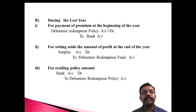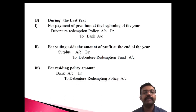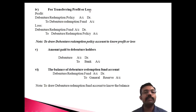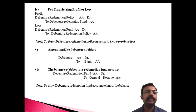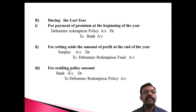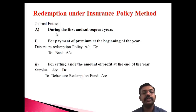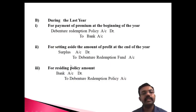To summarize the last year entries: first, paying the premium — Debenture Redemption Policy Account to Bank; second, setting aside profit — Surplus Account to Debenture Redemption Fund; third, receiving the policy amount — Bank Account to Debenture Redemption Policy Account; fourth, transferring profit or loss on the policy; fifth, paying debenture holders; and finally, transferring the balance of the Debenture Redemption Fund Account to General Reserve.